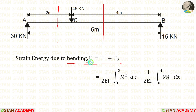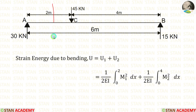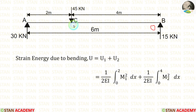The total strain energy is U1 + U2. The formula for strain energy is (1/2EI) × ∫M² dx. Since we have two sections, for the first section the limits are 0 to 2, and for the second section the limits are 0 to 4.